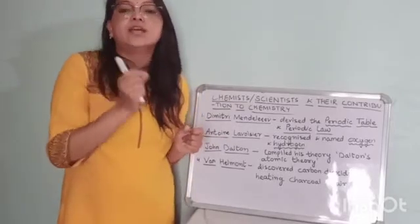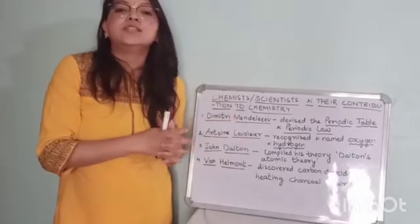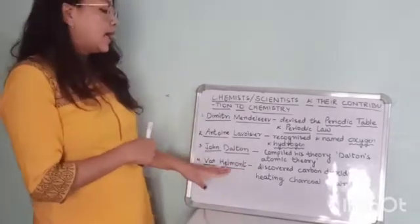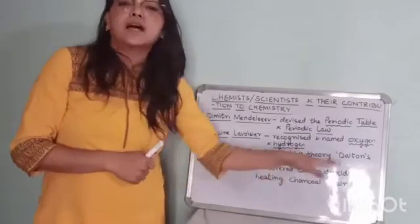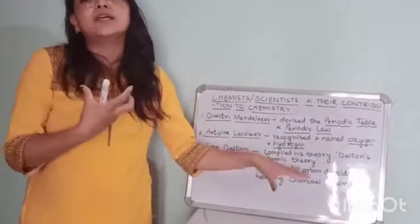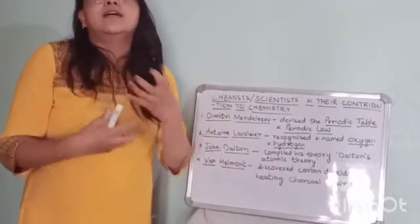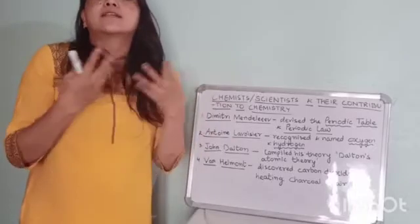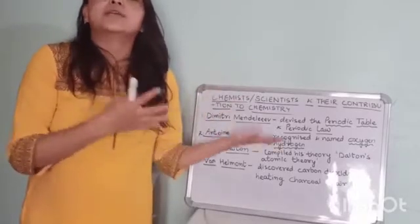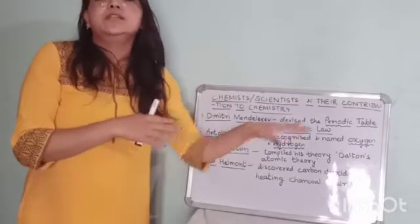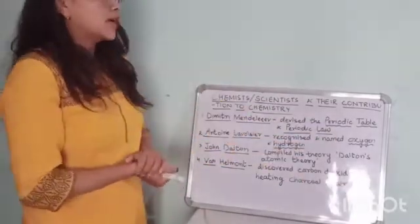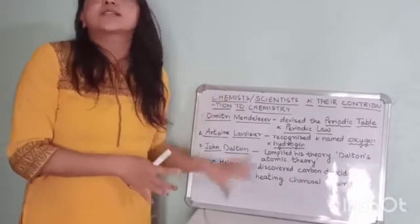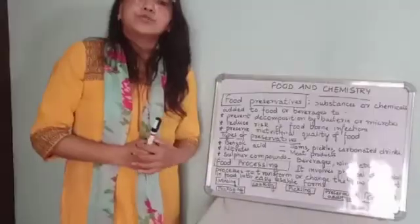The fourth scientist is Van Helmont. He discovered carbon dioxide — he heated charcoal in air, from which a gas came out, and that gas was carbon dioxide. There are other scientists also given in the book, but here we are discussing only a few.